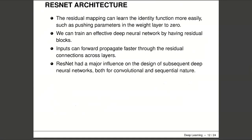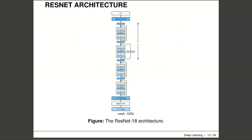We do similarly for the fully connected layer as well. The residual mapping can learn the identity function more easily, such as by pushing the parameters in the weight layer to zero. We can train effective deep neural networks by having residual blocks. ResNet is nowadays a standard convolutional model, successfully applied since 2015 across different domains of deep learning, because it is fast and parameterizing the network is quite straightforward. We have different ResNet architectures that differ in the number of layers and residual blocks used.